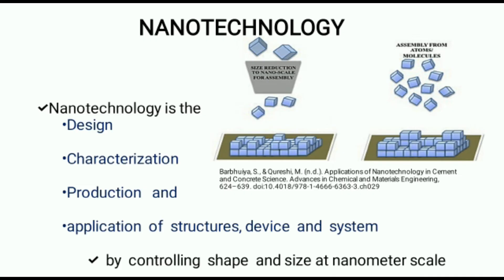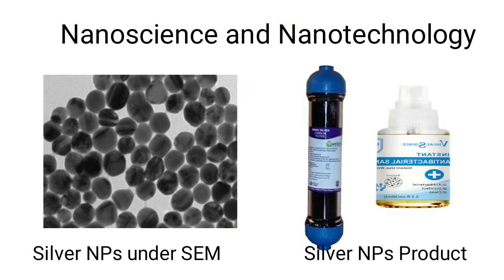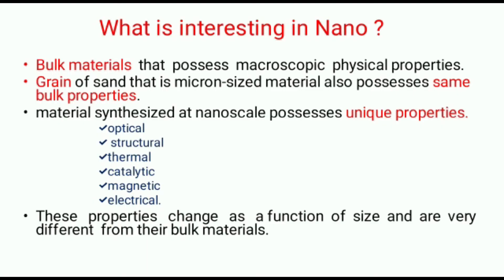Nanoscience and nanotechnology are related: nanoscience is the study of nanomaterials and their properties, and nanotechnology is using those materials and properties to create something new or different. They have the potential to reshape the world around us. For example, the study of silver nanoparticles under SEM is nanoscience, and when those nanoparticles are used to produce a device for applications like antibacterial activity or water purification, that is nanotechnology.